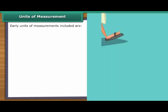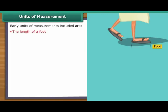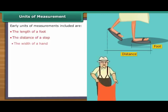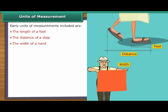Units of Measurement. In the early days, units of measurements included the length of a foot, the distance of a step and the width of a hand. However, these were difficult to maintain as the length of a foot would vary from person to person.